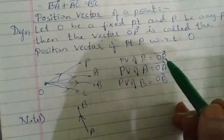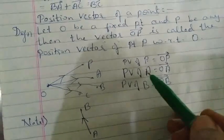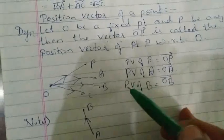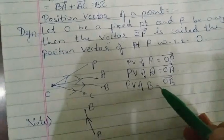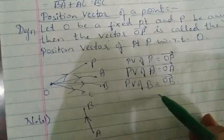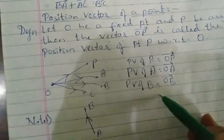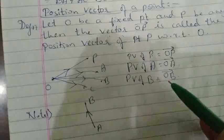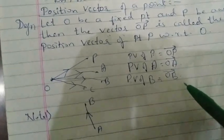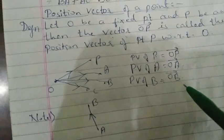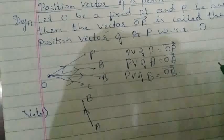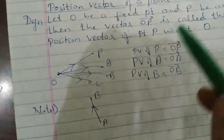Position vector of P — answer: OP vector. Position vector of A — answer: OA vector. Position vector of B — answer: OB vector. Position vector of Q — answer: OQ vector. What does OC vector mean? It is the position vector of C with respect to O, where O is the fixed point.